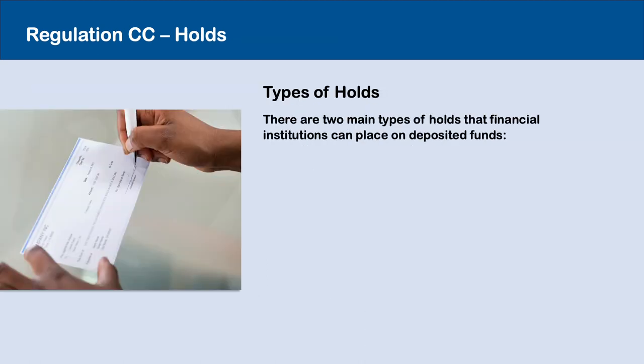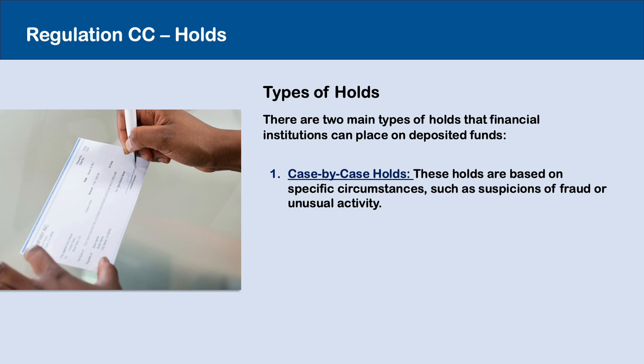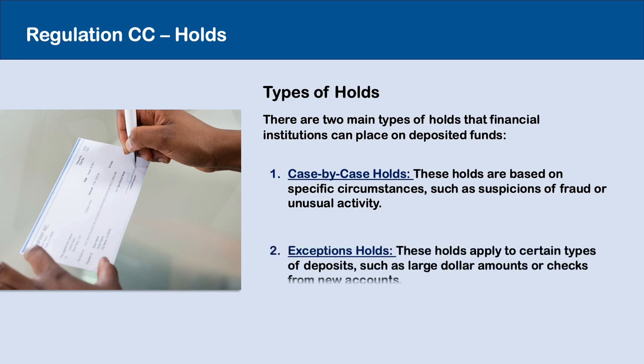Types of Holds: There are two main types of holds that financial institutions can place on deposited funds. 1. Case-by-case holds — These holds are based on specific circumstances such as suspicions of fraud or unusual activity. 2. Exception holds — These holds apply to certain types of deposits such as large dollar amounts or checks from new accounts.